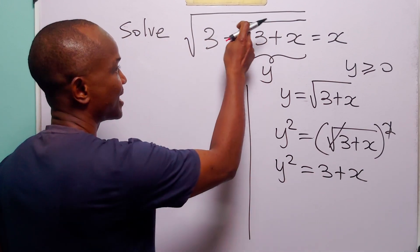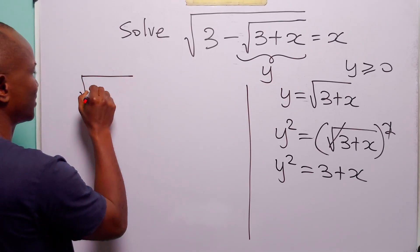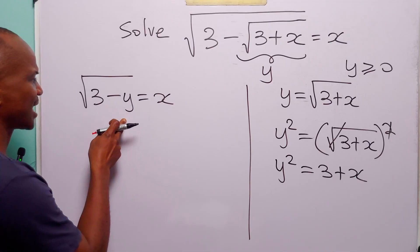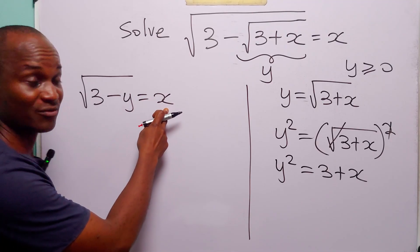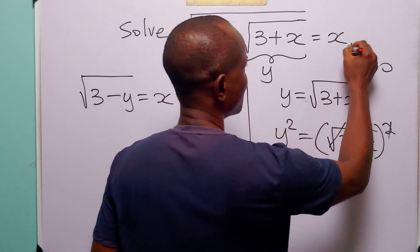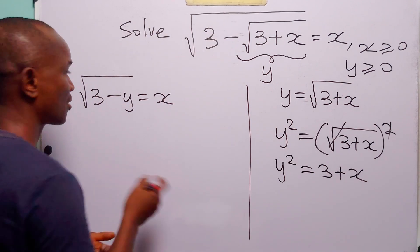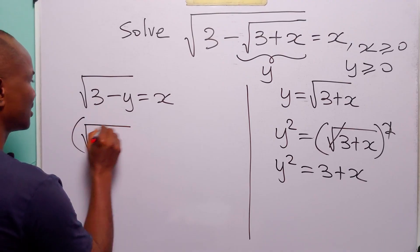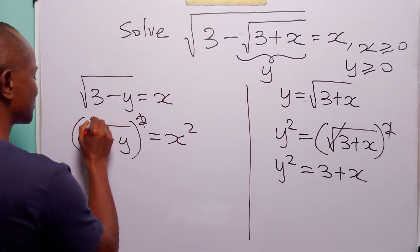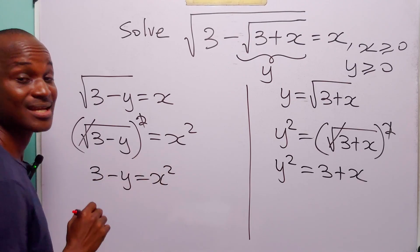Now let us rewrite the original equation including y. We have that the square root of 3 minus y is equal to x. When you look at this equation, you'll see that x must be positive, because it is equal to a square root, which must always be positive. So we also have that x must be greater than or equal to 0. When we square both sides of this equation, the square takes care of the square root, leaving us with 3 minus y is equal to x squared.